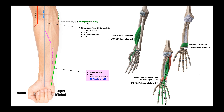Hopefully this video gave you a good overview of the innervation of the muscles in the anterior compartment of the forearm. In the next video we're going to take a look at these two nerves as they enter the hand and see how the intrinsic hand muscles are innervated by them.